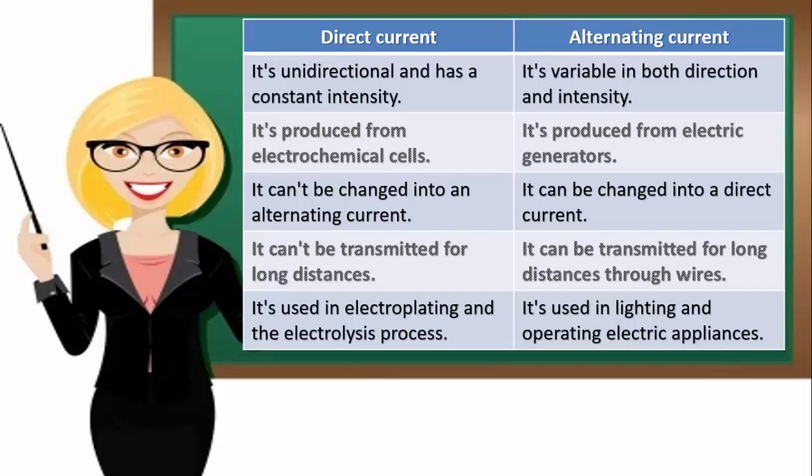Change to another type: direct electric current can be converted into an alternating current. Alternating electric current can be converted into a direct current.